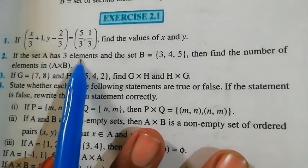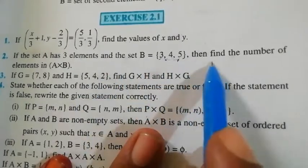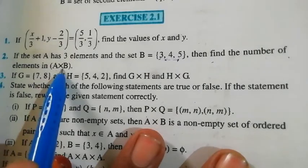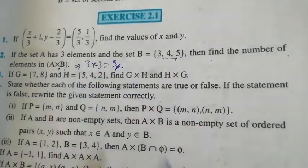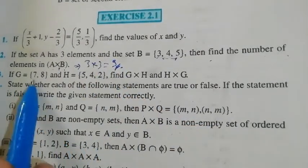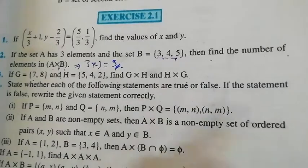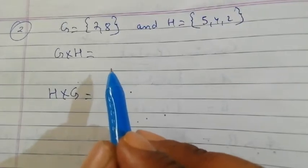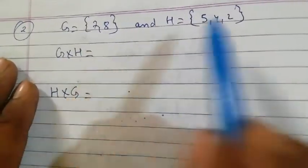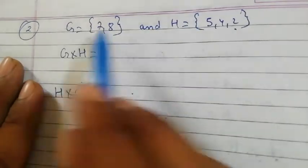Now the second question: set A has 3 elements and set B also has 3, 4, and 5 elements — we need the number of elements in A×B. n(A)×n(B) = 3×3 = 9 elements. Next: if G = {7, 8} and H = {5, 4, 2}, find G×H and H×G. Set G has 2 elements and set H has 3 elements, so the product will have 2×3 = 6 elements.